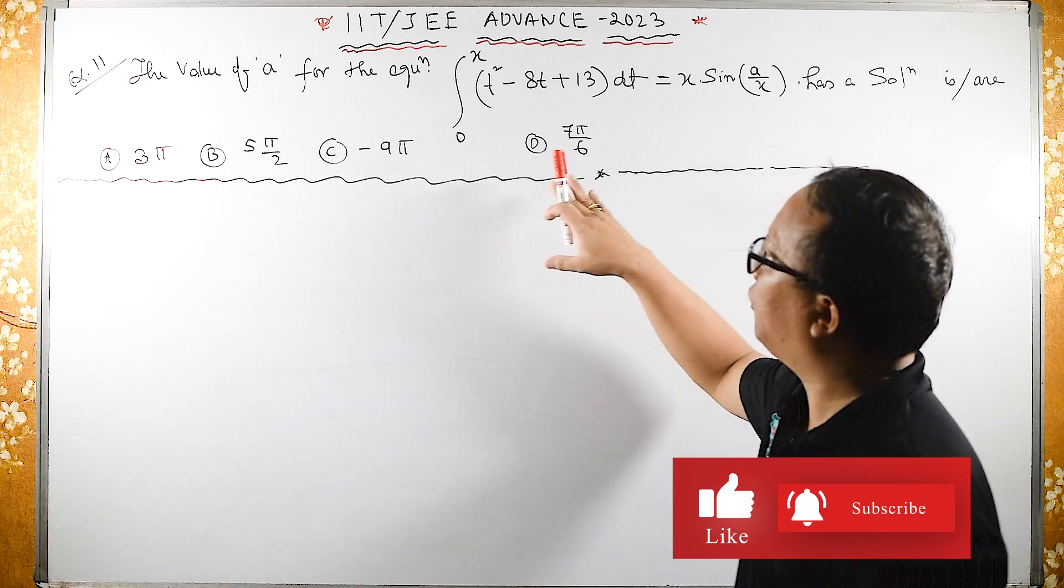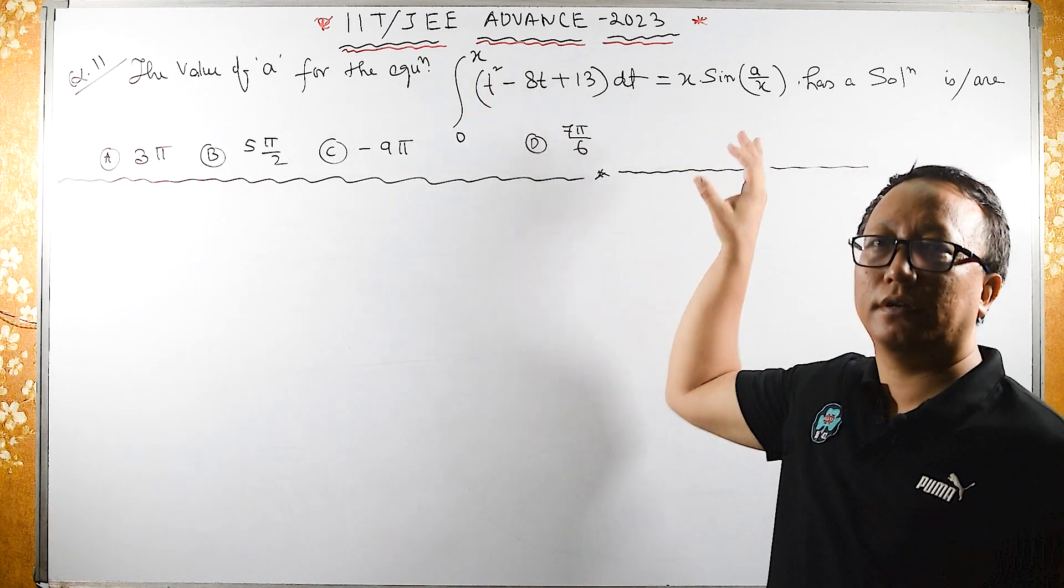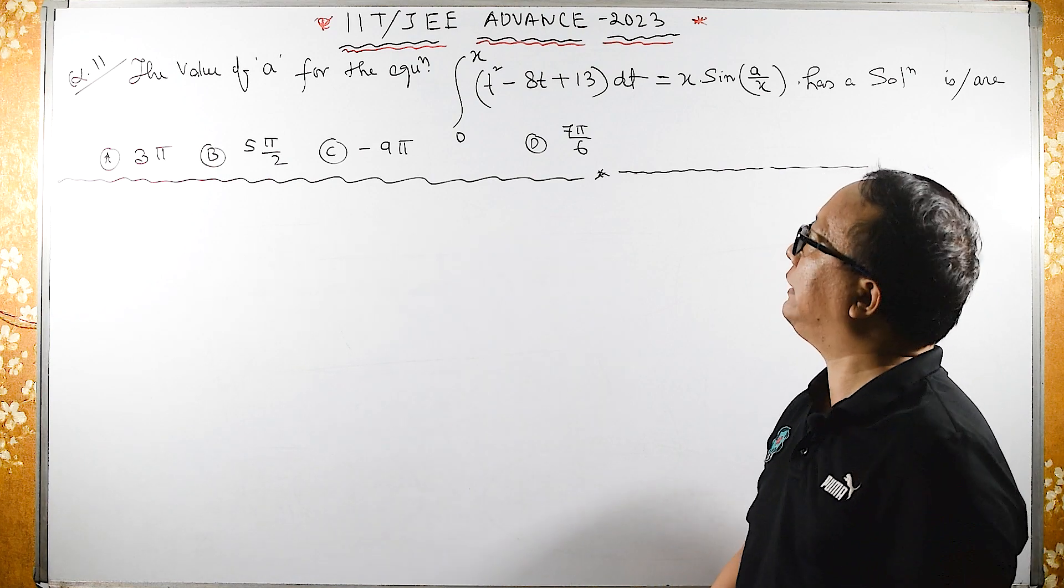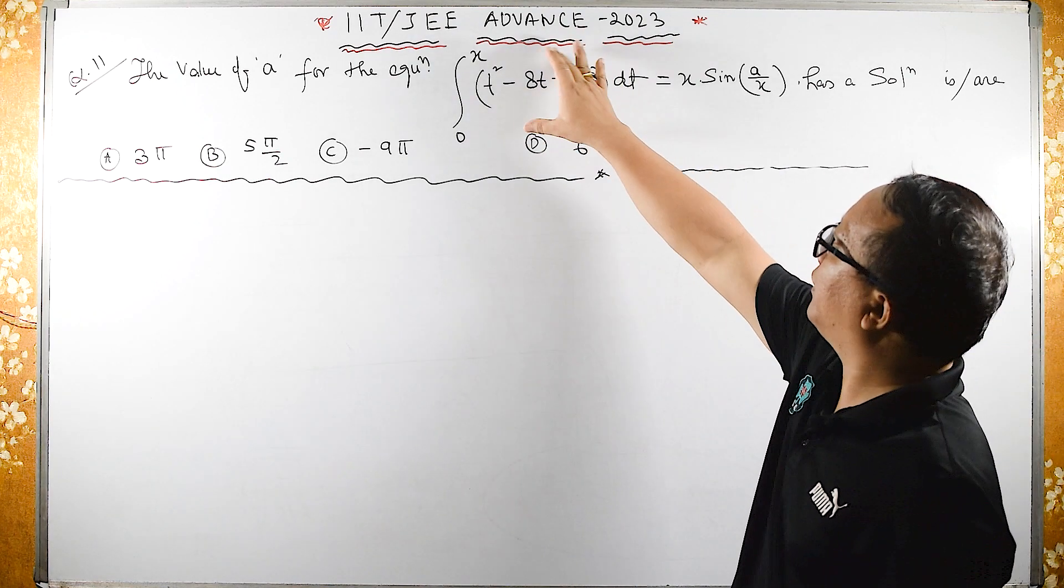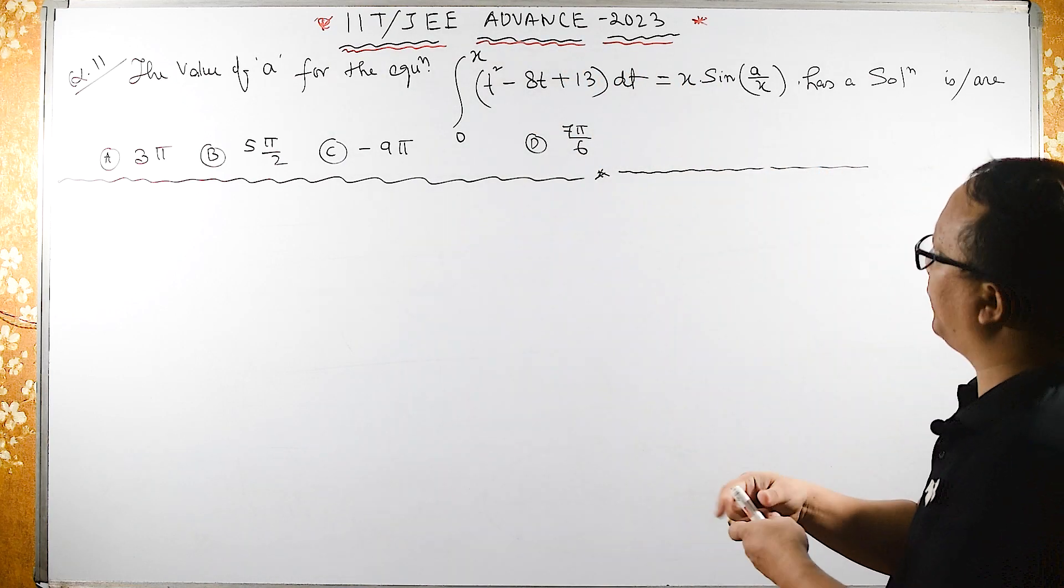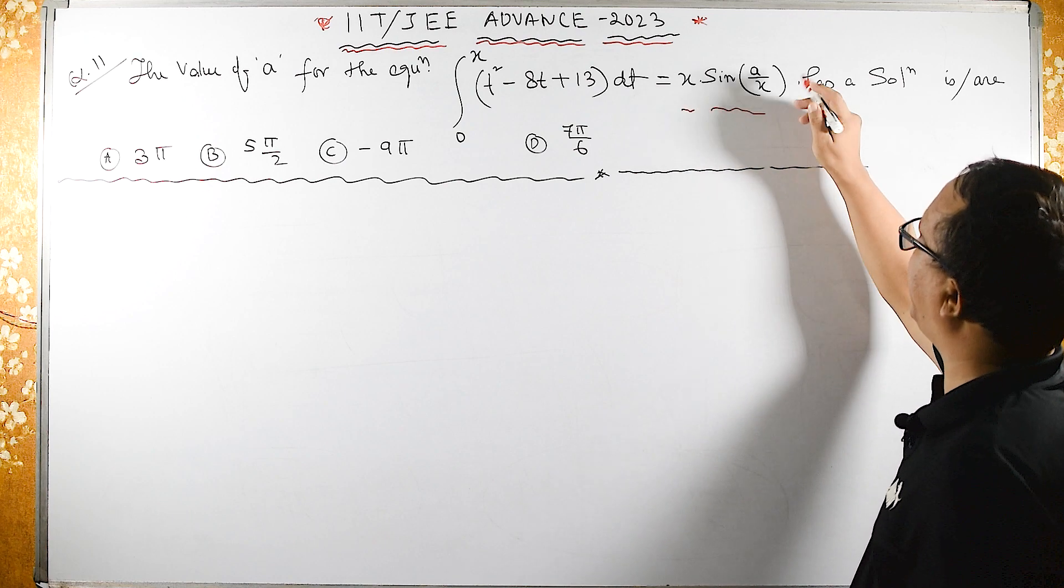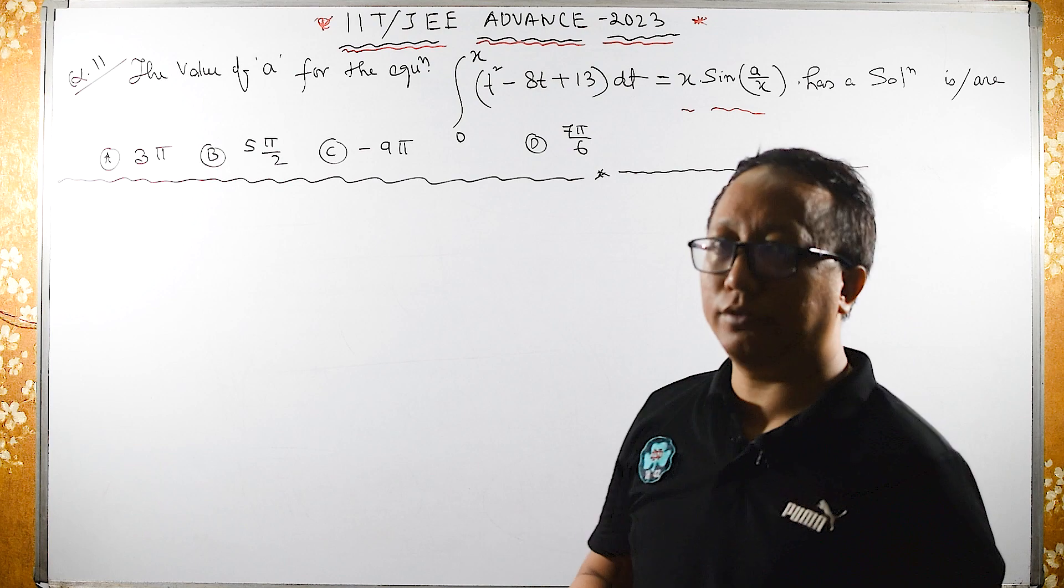So we have 4 options. After looking at these equations, most people must be wanting to apply Leibniz rule. Left hand side is okay, but on the right hand side you have 2 functions: X as well as sin(A/X). For this you have to apply product rule, u into v rule.